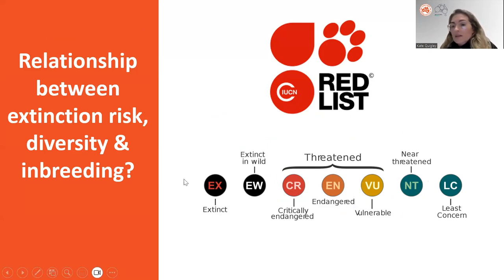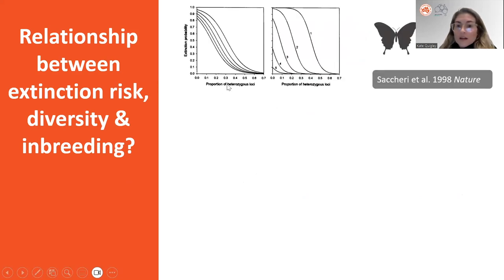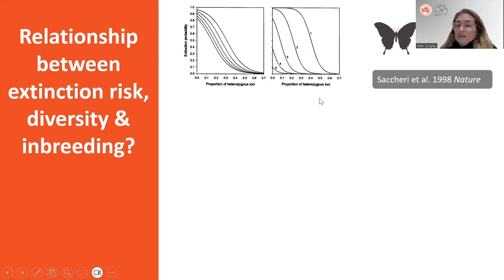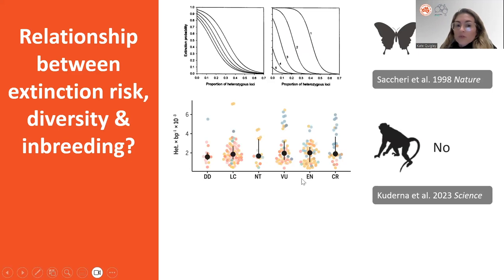As part of the IUCN Red List, organisms can be classified in different categories ranging from least concern down to extinct. A classic study looking at butterflies found a relationship between overall genetic diversity and a decline in genetic diversity and extinction risk. However, in other organismal groups — shown along the x-axis by different IUCN categories — there was actually no relationship between different primate groups and overall genetic diversity.